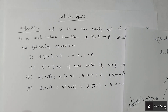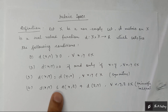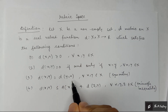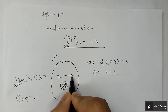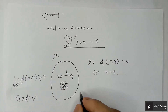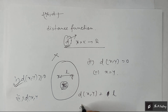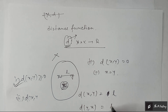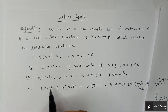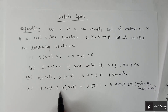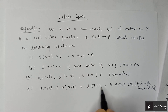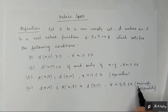The third condition is d(x, y) equals d(y, x) — symmetry. Here also, the distance between x and y is the same as the distance between y and x. And the fourth condition: d(x, y) is less than or equal to d(x, z) plus d(z, y) for all x, y, z belonging to X. This is called the triangular inequality.